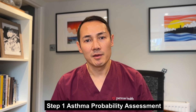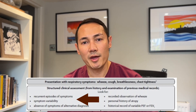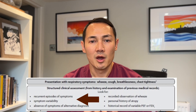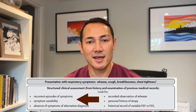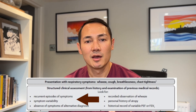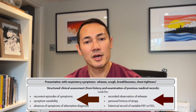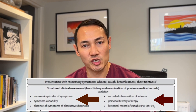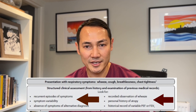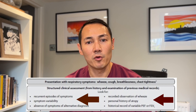Step 1: Assess for asthma probability. There are six signs and symptoms and the more of these present, the higher the probability. 1. Recurrent symptoms of cough, wheeze, shortness of breath, or chest tightness. 2. Variation of symptoms over time such as days or season. 3. Absence of alternative diagnosis. 4. History of documented wheeze. 5. Personal or family history of atopic condition such as hay fever or eczema. And 6. Historical record of peak flow variation.